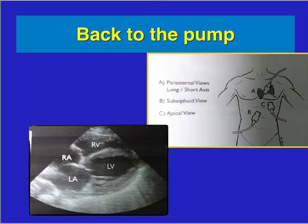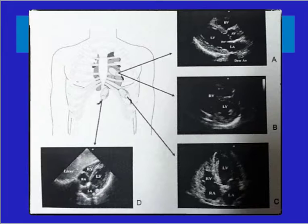Starting with the pump: the best approach is a good parasternal long view, then move to short axis for more information. Apical and subcostal views can help if you can't get a good view. Patients with COPD or emphysema have great subcostal views, while obese, post-surgical, or pregnant patients have poor subcostal views — you almost always need to go more superior toward the head to get a good parasternal region view.